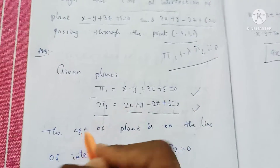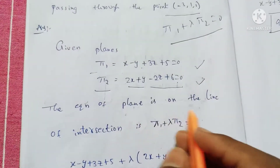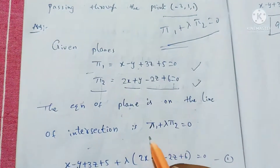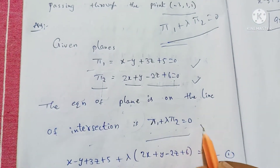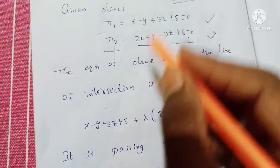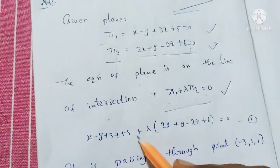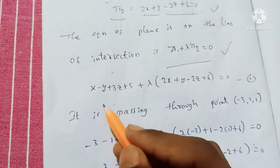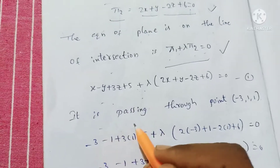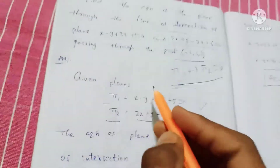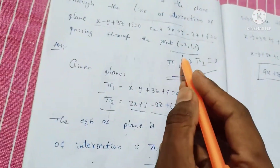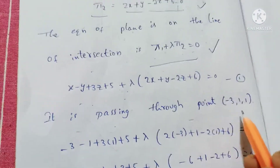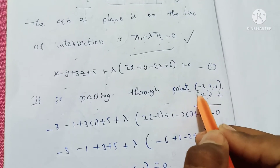The equation of the plane on the line of intersection is given by the formula: π₁ plus λ into π₂ equals 0. So substituting plane 1 plus λ into plane 2 equals 0. Since the plane is passing through the point minus 3, 1, 1, we substitute x, y, z with those values.